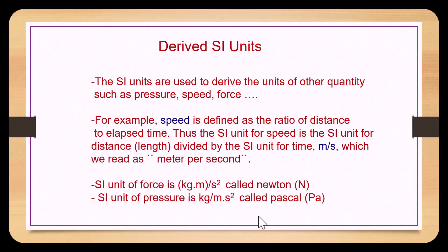SI units are used to derive other quantities such as pressure, speed, and force. For example, speed is defined as the ratio of distance to elapsed time. The SI units for speed would be distance in meters and time in seconds, giving us meters per second. Other derived SI units include the newton and the pascal.